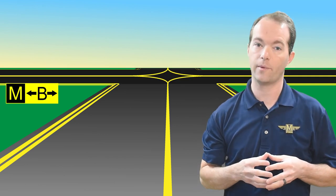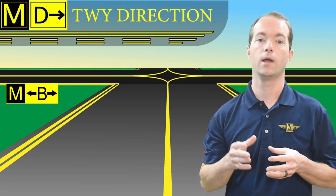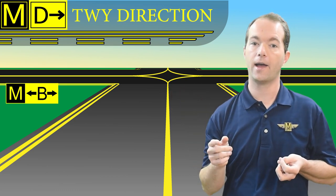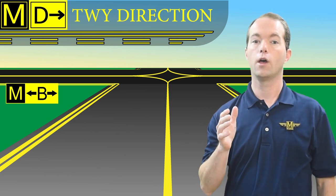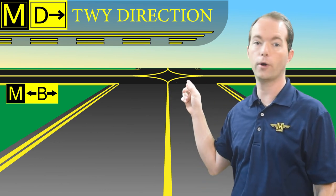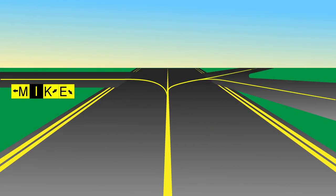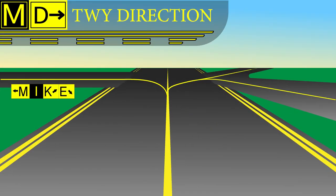You'll also see taxiway direction signs along with the location signs — these will tell you which direction to turn to get to that taxiway. They're located off to the side, but immediately before the intersecting taxiway. The direction sign will have an arrow to point you the right direction, and its position relative to the location sign will tell you whether it's a right or a left turn. If it's a simple intersection, you'll see a sign where echo is crossing alpha. For example, if you turn left you'll be on taxiway Mike; you're currently on India. A gentle right and you'll be on kilo, and a hard right and you'll be on echo.